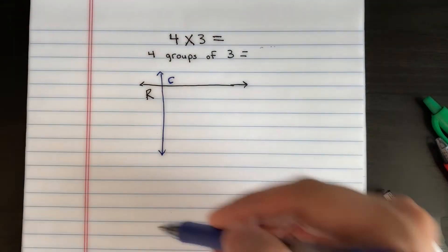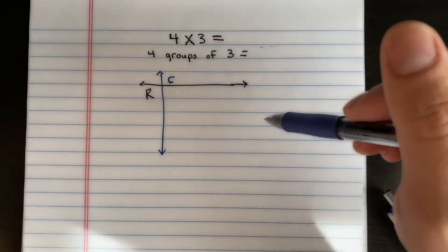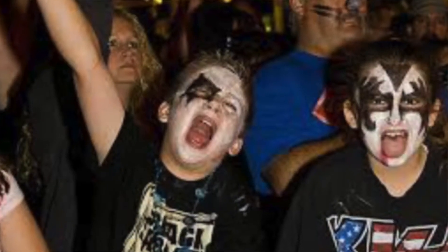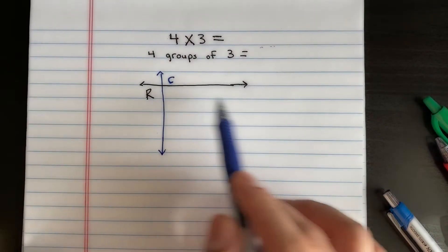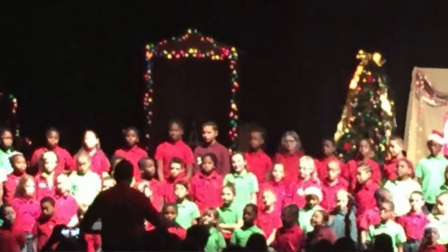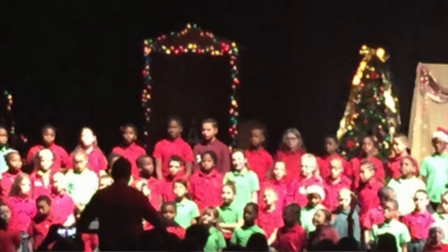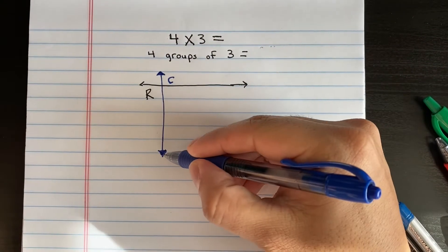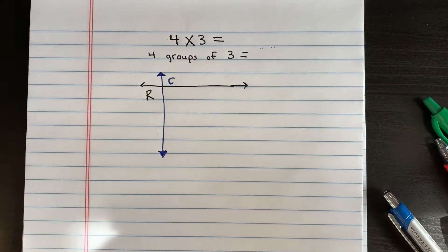You might have seen a row, maybe at a concert when you go see your favorite singer, maybe at church, or maybe you have to stand in rows at your holiday Christmas program. And columns go up and down. Maybe you have to go down the column to find your seat, or maybe you need to go up the column to find your seat.